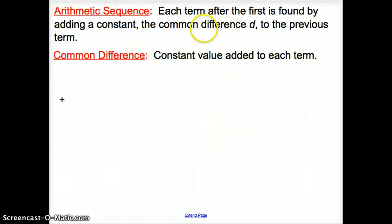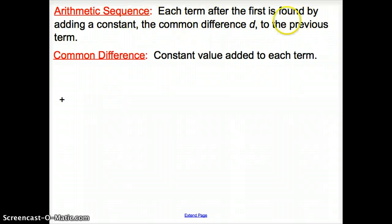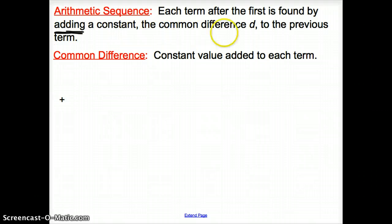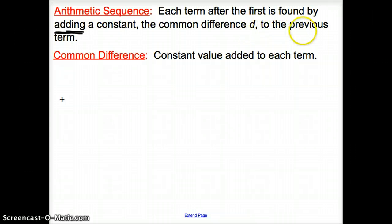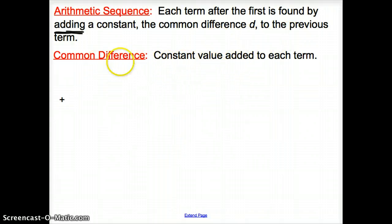What are some different types of sequences? We have an arithmetic sequence. An arithmetic sequence is each term after the first is found by adding — keyword there — adding a constant, the common difference, to the previous term. The common difference is just a constant value that does not change; it's added to each term.